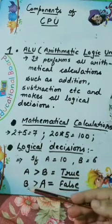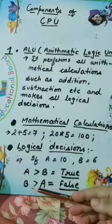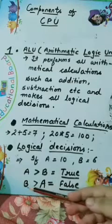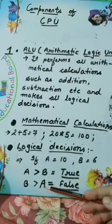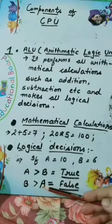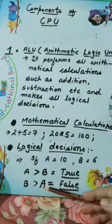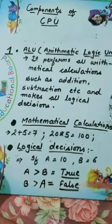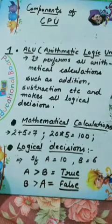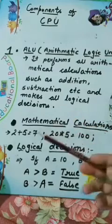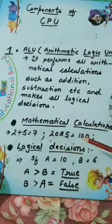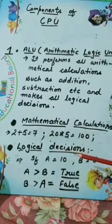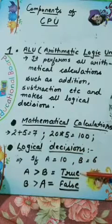Now compare again: if B is greater than A, means 6 is greater than 10 — no, 6 is not greater than 10, so the result will be false. In mathematical calculations, the result comes in the form of numbers. But in logical operations, the result comes in the form of either true or false.